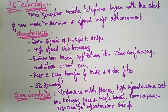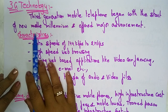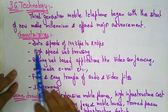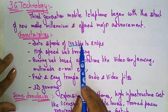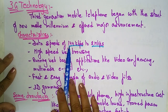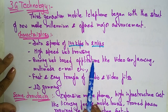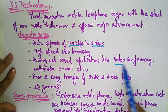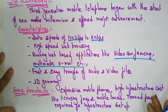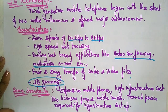The third generation, 3G technology, began with the start of the new millennium and offered major advantages over 2G. The data speed increased from 144 kilobits per second up to 2 megabits per second. It enabled high-speed web browsing, running web applications, video conferencing, multimedia email, and fast and easy transfer of audio and video files. 3D gaming was also supported in 3G technology.